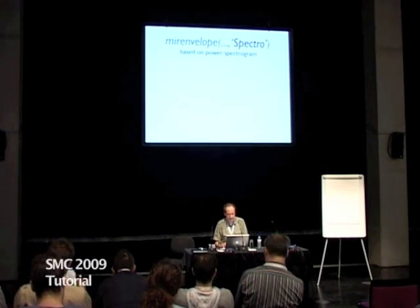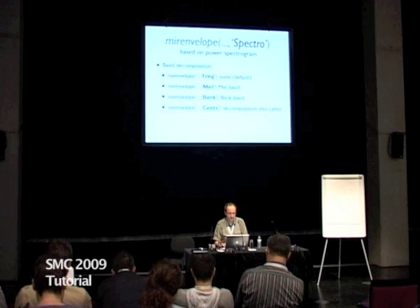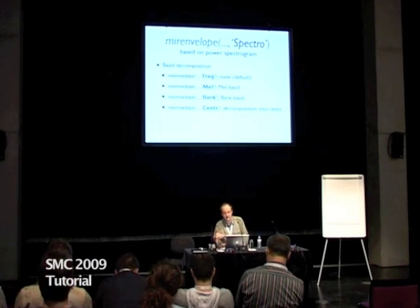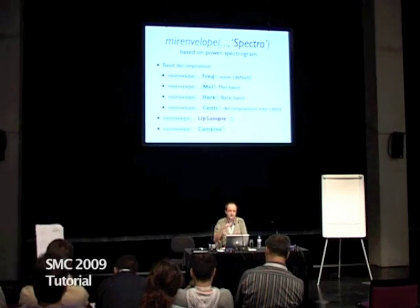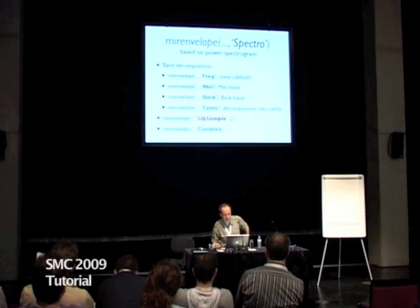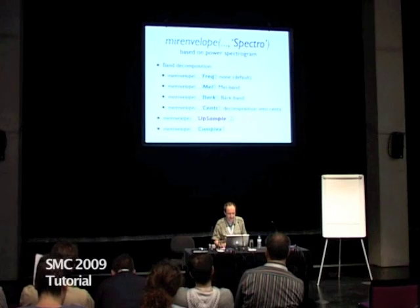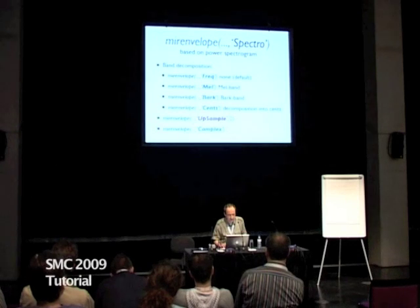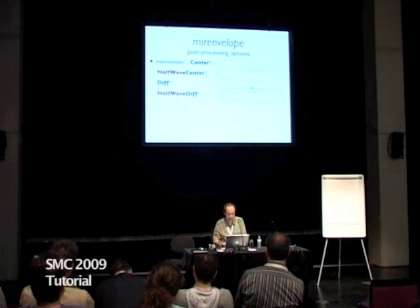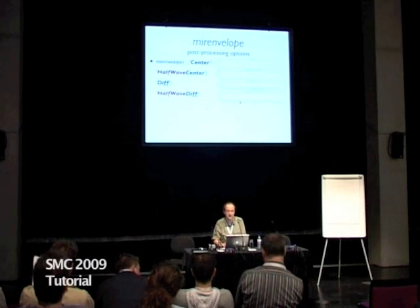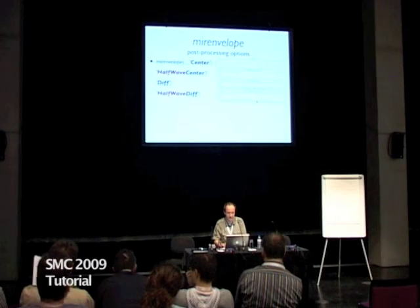You can also compute the envelope based on the spectrogram. By default, you have the spectrogram and you can sum all the bands in the end. But you can also see the spectrogram in the Mel bands, Bark bands, or decomposed into cents. Because we use frame decomposition of the spectrogram, it usually has a low sampling rate, so you need to upsample after. Post-processing operations include half-wave rectification, differentiation of the envelope to see bursts of energy, and taking the positive difference. This is very useful for tempo estimation, where this curve is used to see the periodicities.